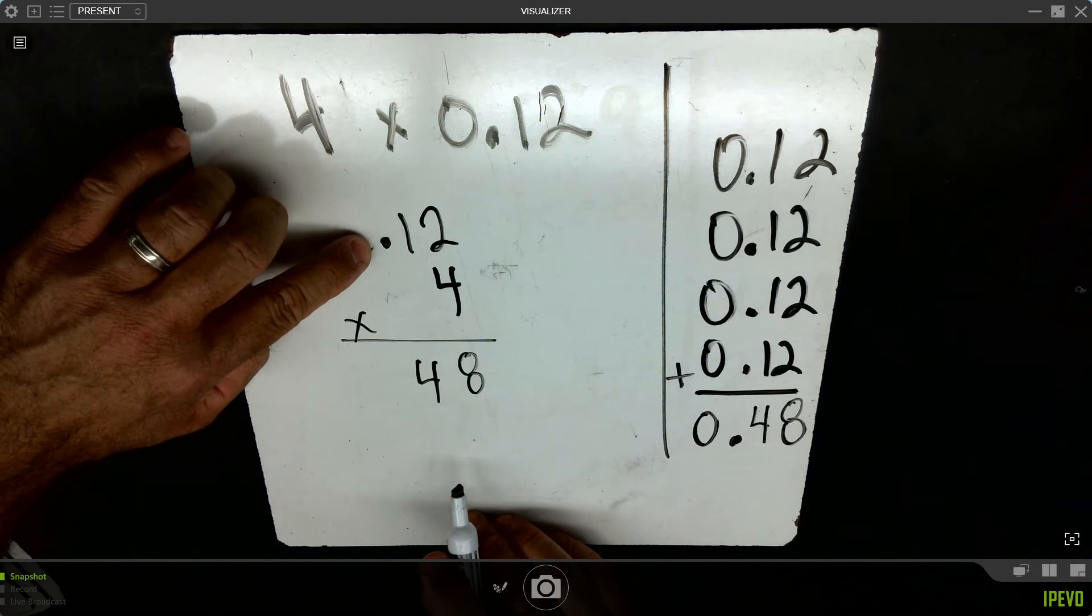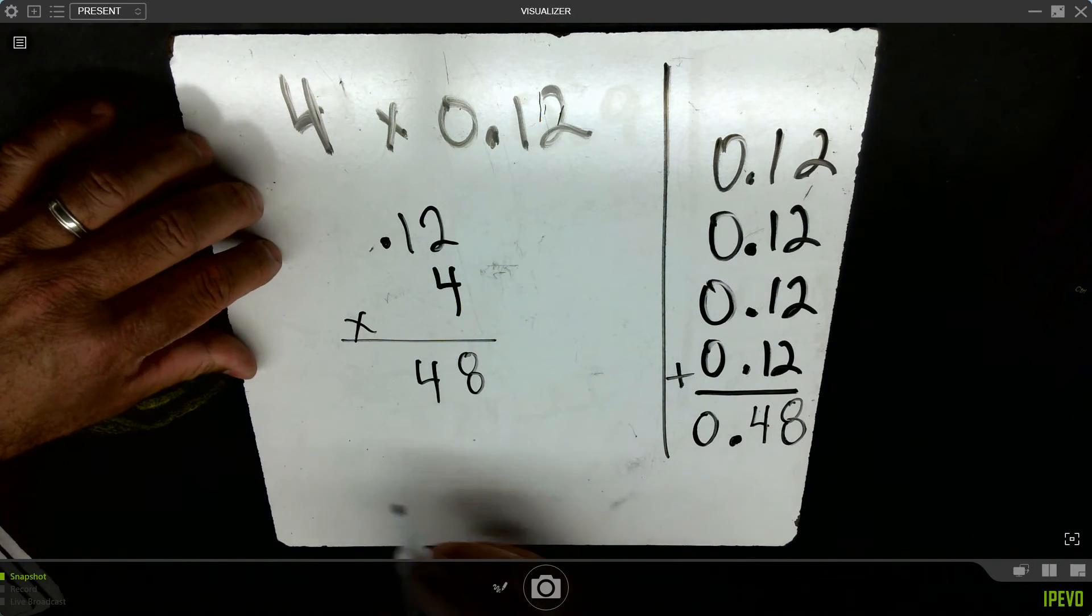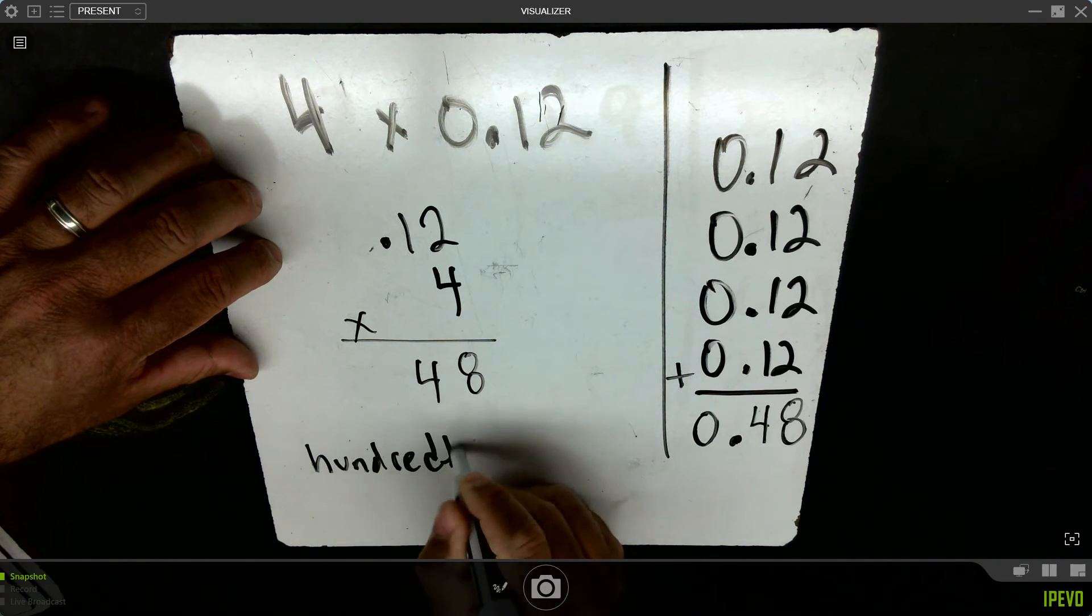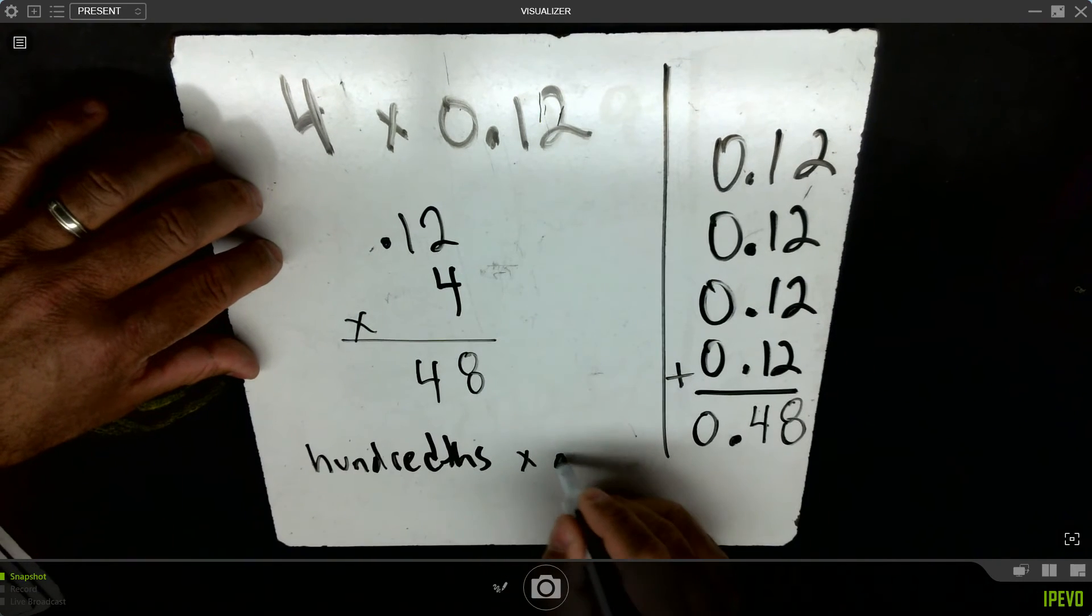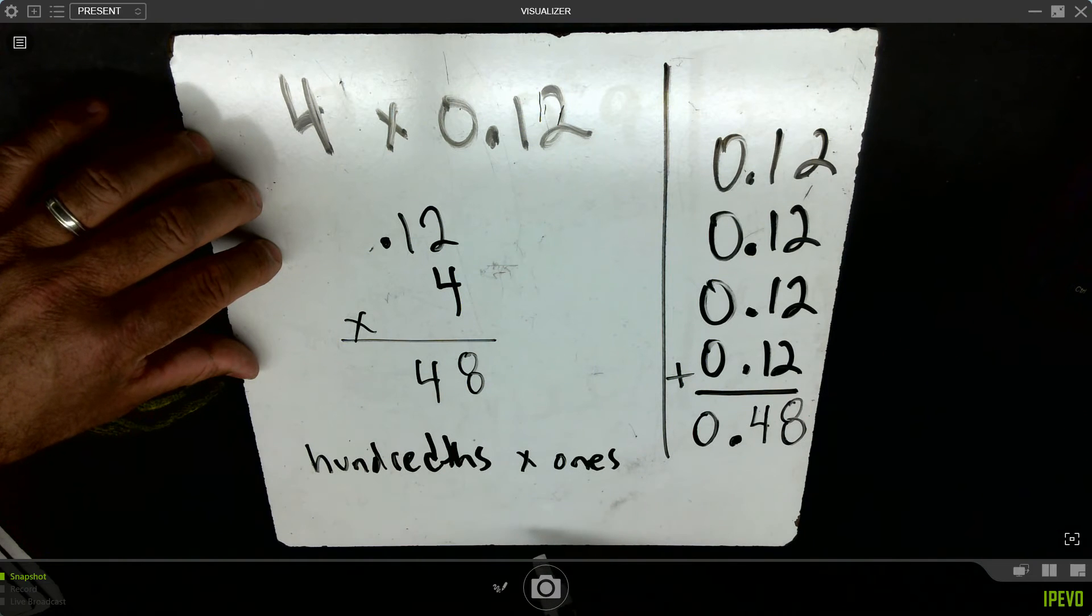But remember, this is 1,200s. When we multiply 1,200s by ones, 1,200s times ones are going to give us 1,200s in our answer.